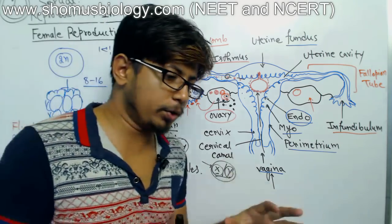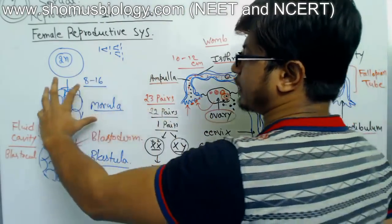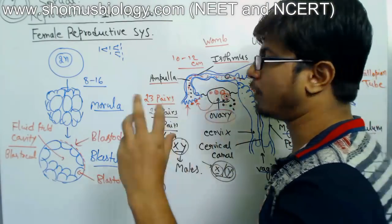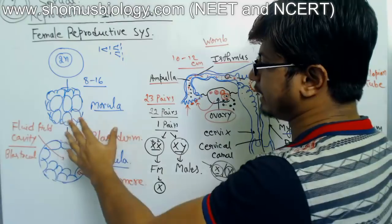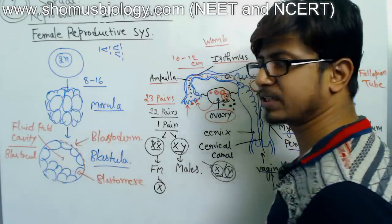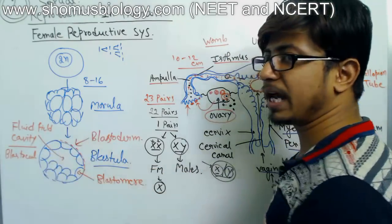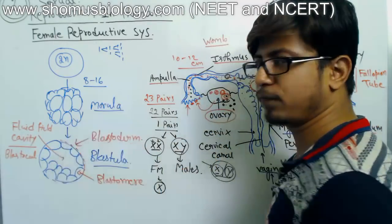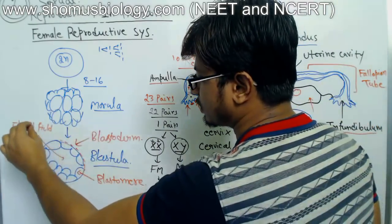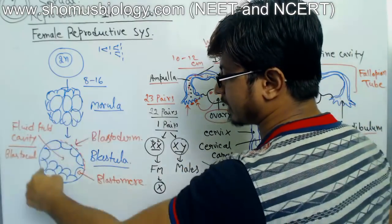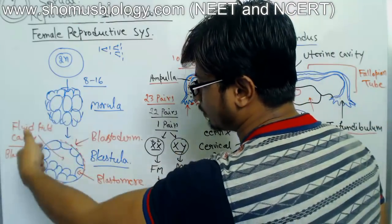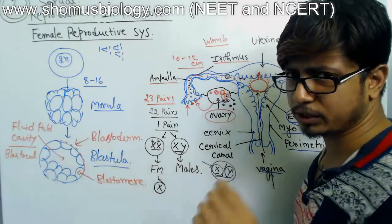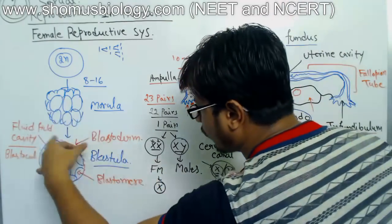The morula is an undifferentiated, fully compact mass of cells like a solid sphere. Once cells start rearranging, they form the blastula — a hollow sphere with a fluid-filled center called the blastocoel, surrounded by blastomere cells. The total outer membrane is called the blastoderm, also known as the trophoblast.